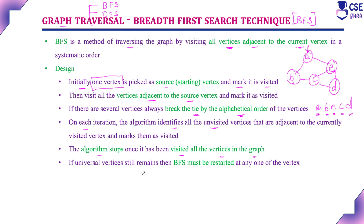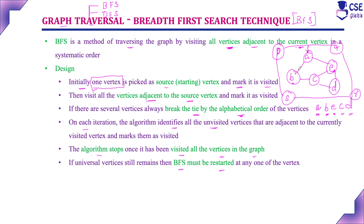If there are any unvisited vertices still remaining, BFS must be restarted. Suppose there are vertices P, Q, R, S not connected to the graph containing A, B, C, D, E. This graph and that graph are not connected. Since those vertices are not reachable from the first graph, if unvisited vertices still remain, BFS must be restarted.